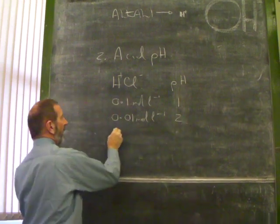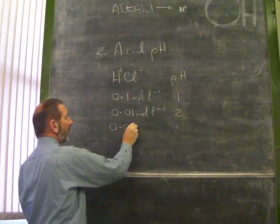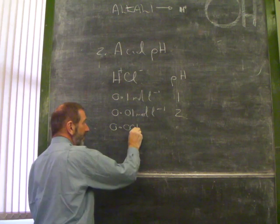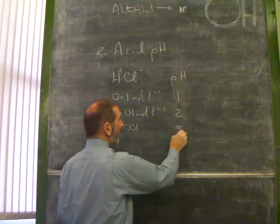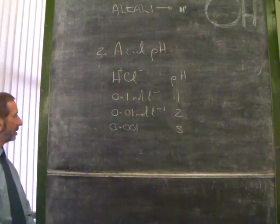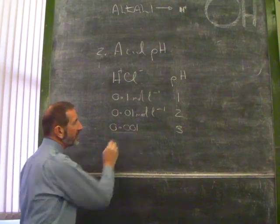its pH would be 2. And as we continue to water it down by a factor of 10, the pH goes up by 1. What's the connection? You might say, well, it's the number of zeros.